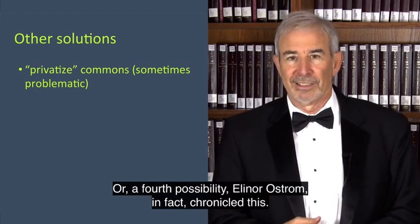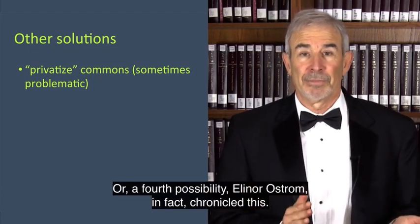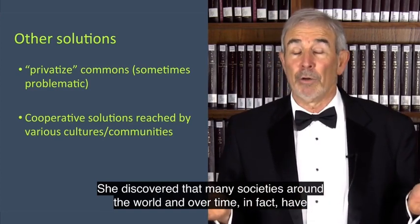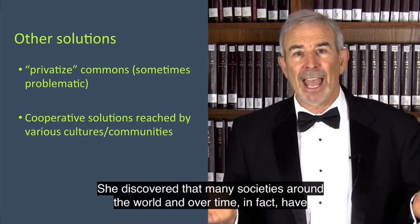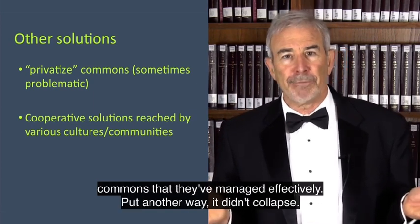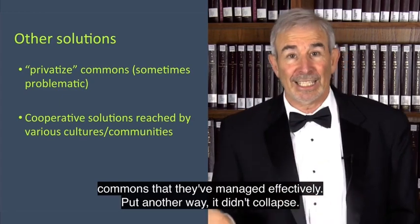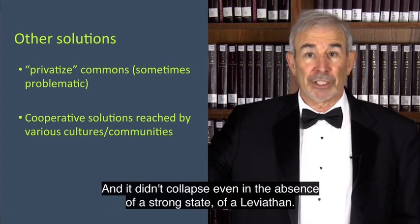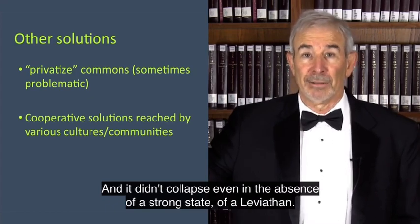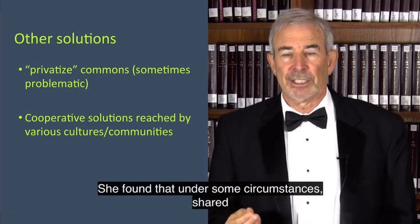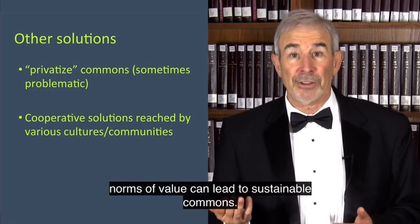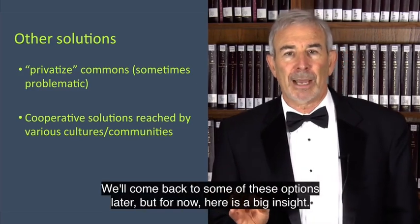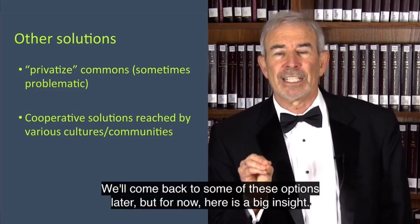Or, a fourth possibility. Eleanor Ostrom, in fact, chronicled this. She discovered that many societies around the world and over time, in fact, have commons that they've managed effectively. Put another way, it didn't collapse, and it didn't collapse even in the absence of a strong state, of a Leviathan. She found that under some circumstances, shared norms of value can lead to sustainable commons. We'll come back to some of these options later, but for now, here is a big insight.